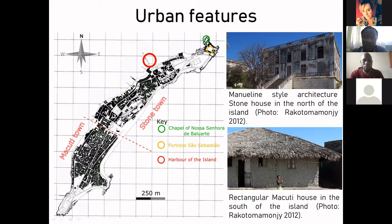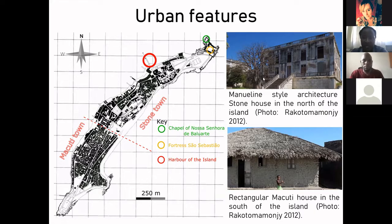This part of the island was settled mainly by Europeans like the Portuguese who were there from the 16th century onward, and they were in charge of running the trade taking place in the main harbor. The main buildings that characterize this island include the main harbor where commerce took place, the fortress called Fortaleza San Sebastião — one of the emblematic buildings of the Portuguese occupation in the Eastern African coast — and also the chapel of Nossa Senhora de Baluarte, which shows the print of the settlement of Christianity on this island.